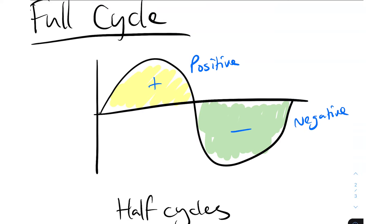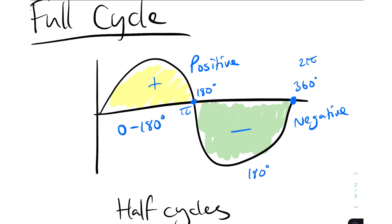In the previous video we discussed how the unit circle is used for waveforms — I'll link it here if you haven't watched it. We discussed how this point on the sine wave would be 360 degrees or 2π, and this point here is 180 degrees or π. So it's very important to keep in mind that for any sine wave, the positive half cycle is between 0 and 180 degrees, and the negative half cycle is between 180 and 360 degrees.